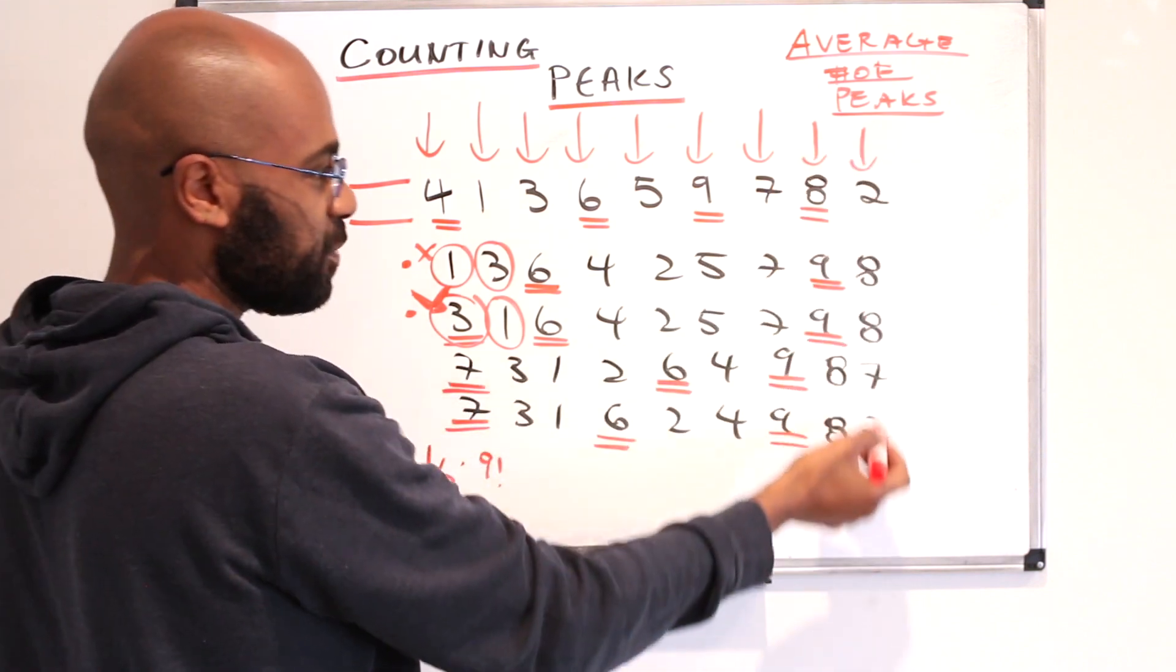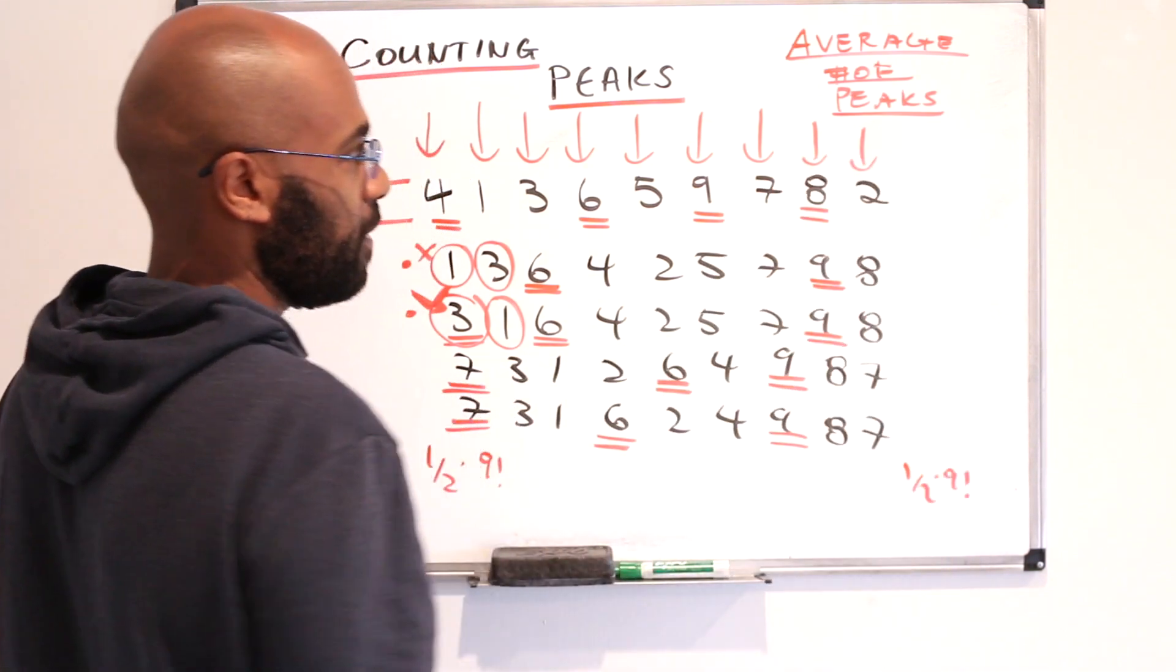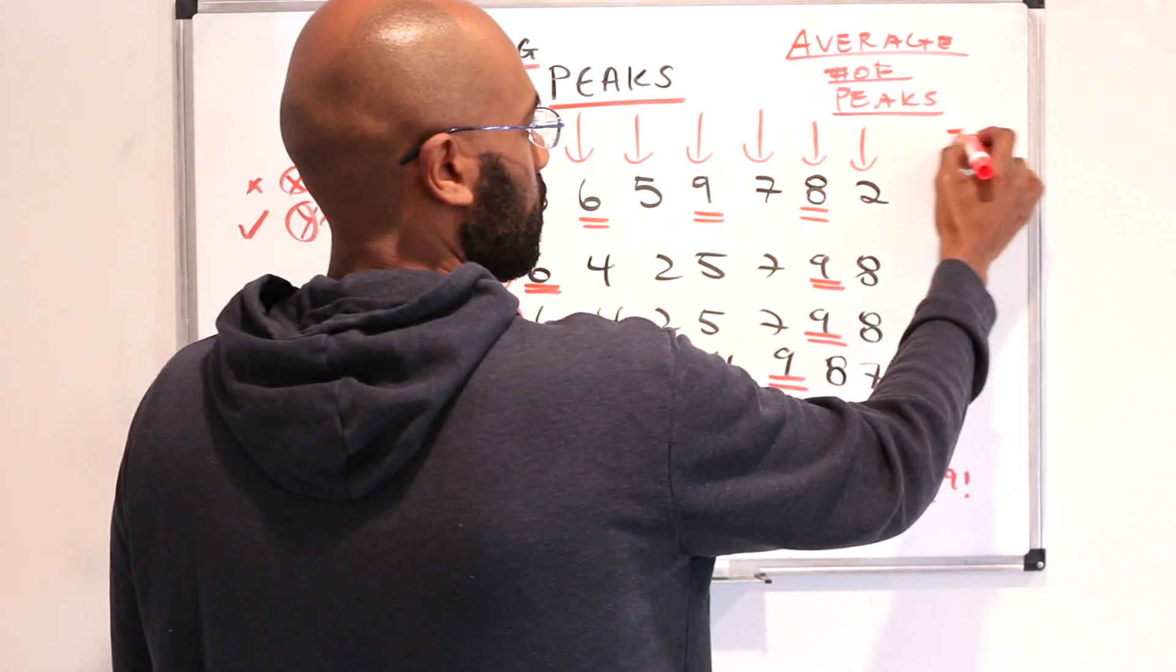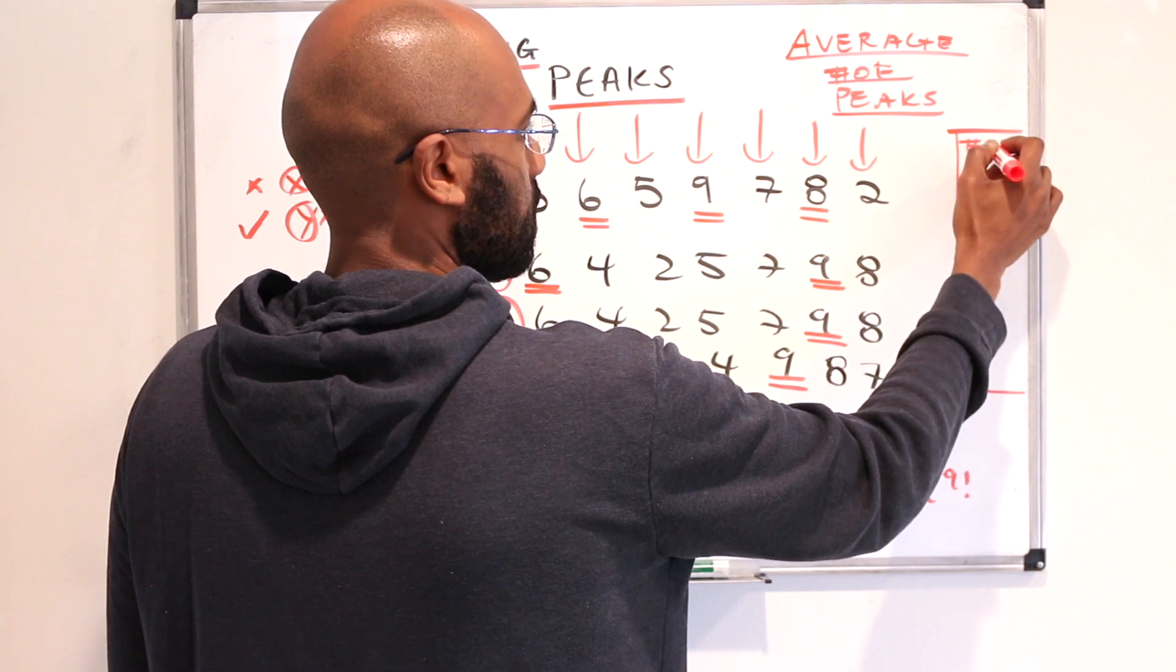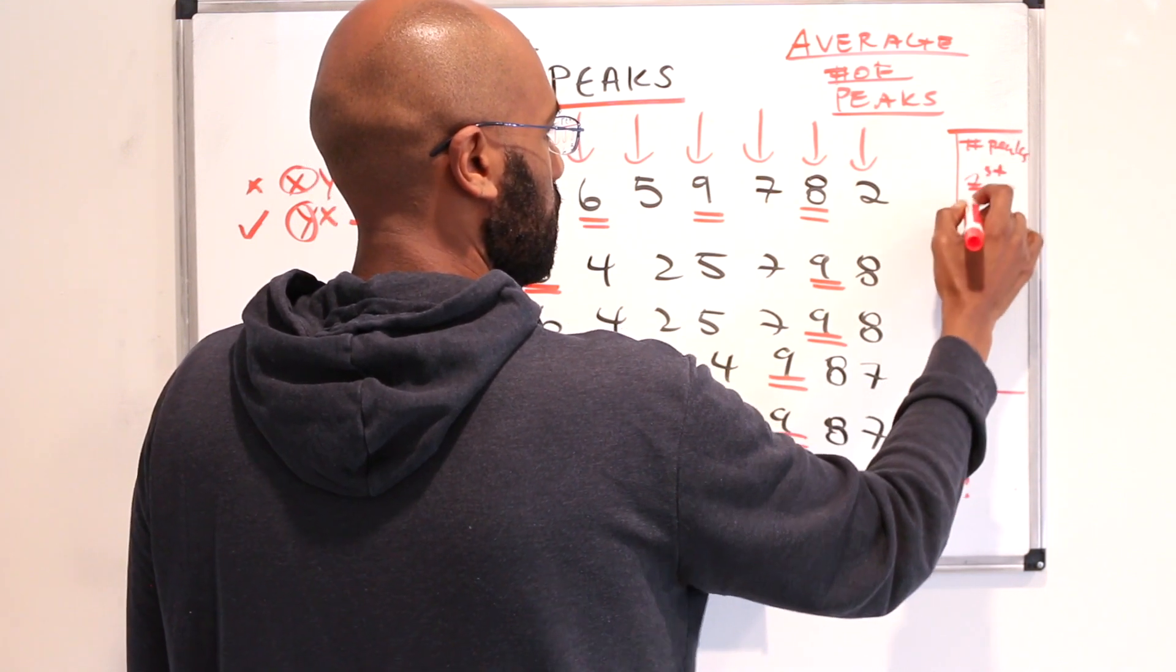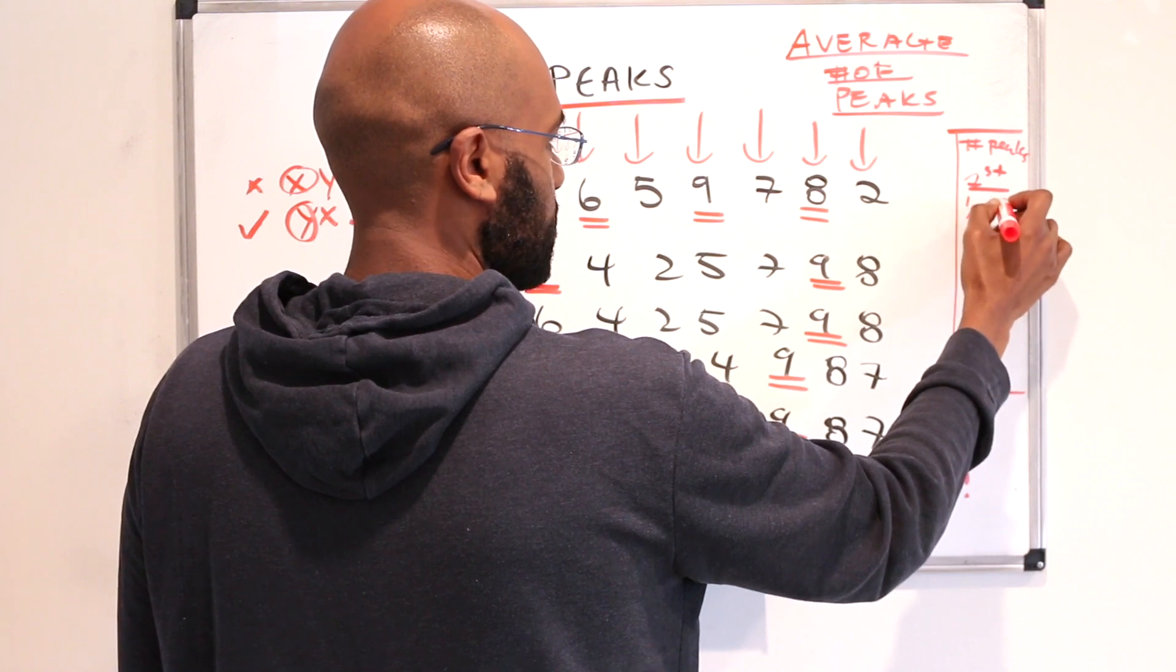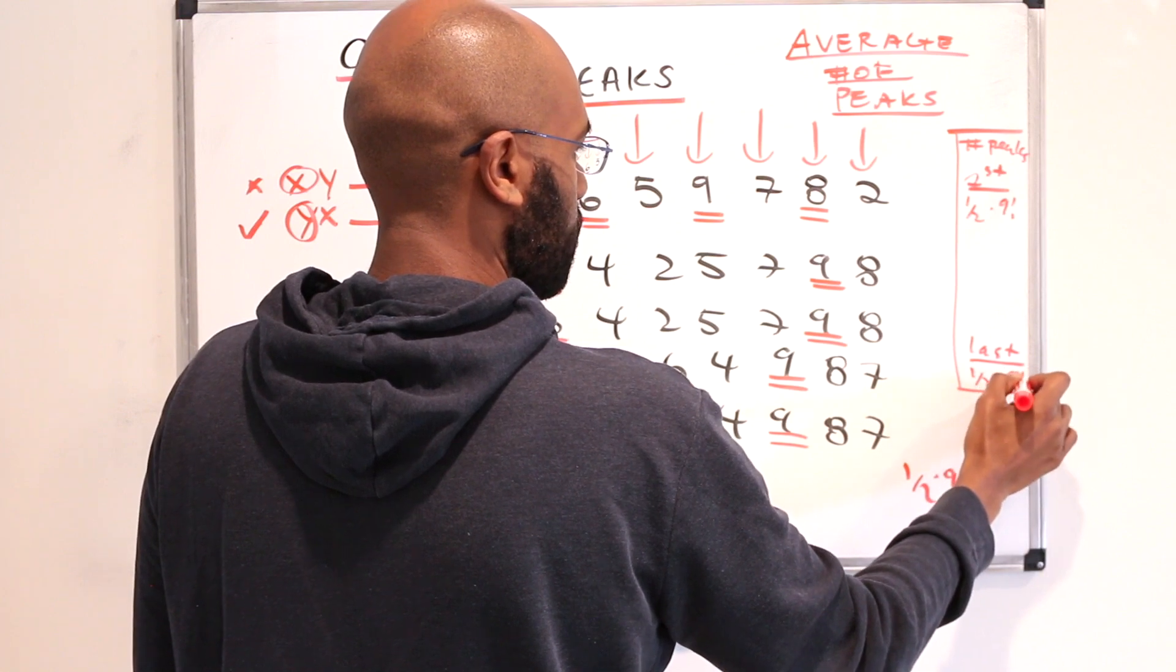Similarly, in this last position, we're going to see exactly half times nine factorial as well. So I'm going to keep those in mind that the number of peaks in the first position is a half times nine factorial, and the last is also a half times nine factorial.